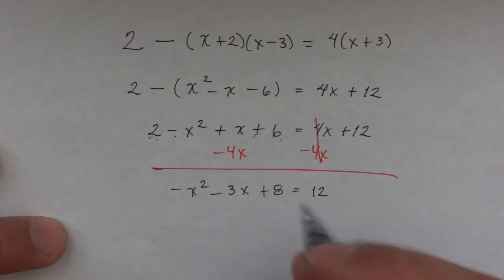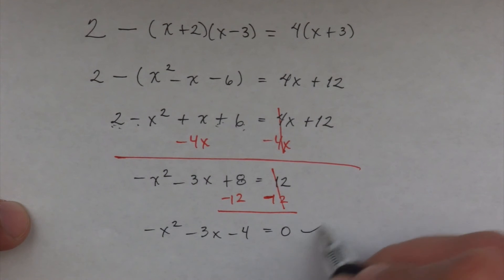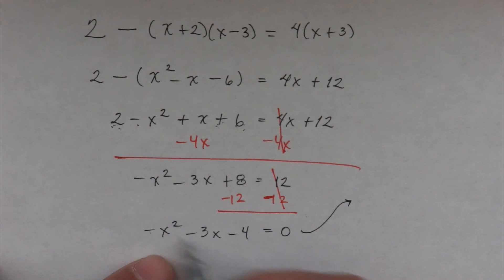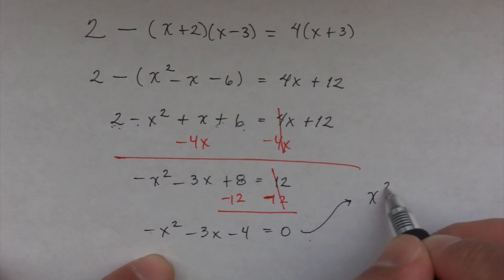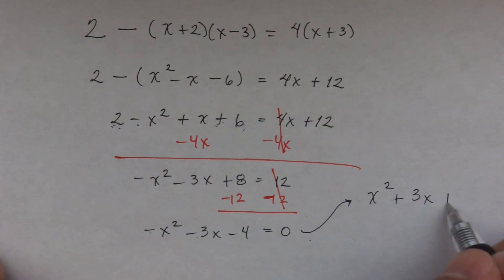I can continue -12, -12. That becomes a zero. So I have -x² - 3x - 4 = 0. You know what, I don't like the way that looks. So what I'm going to do, I'm going to bring everything to the right side of the equal. So this guy comes over becomes a positive x². The -3x goes over becomes a positive 3x. The -4 goes over becomes a positive 4. And it's still equal to zero.